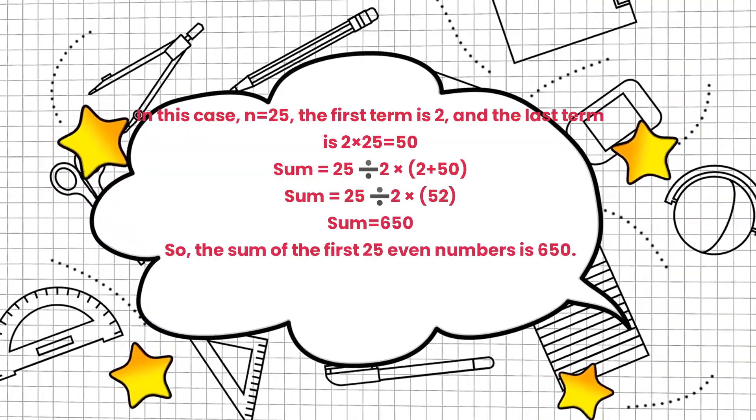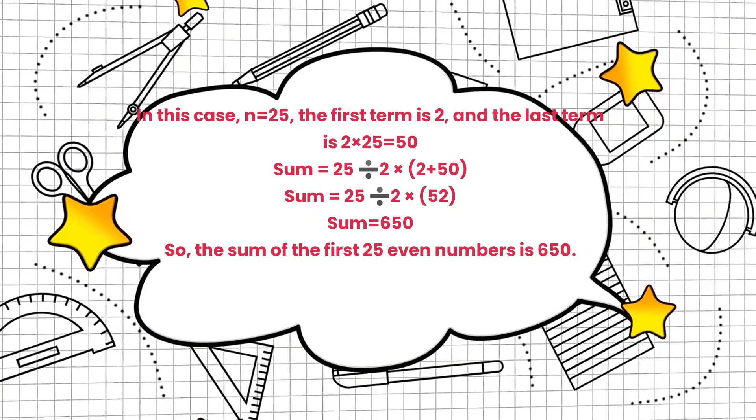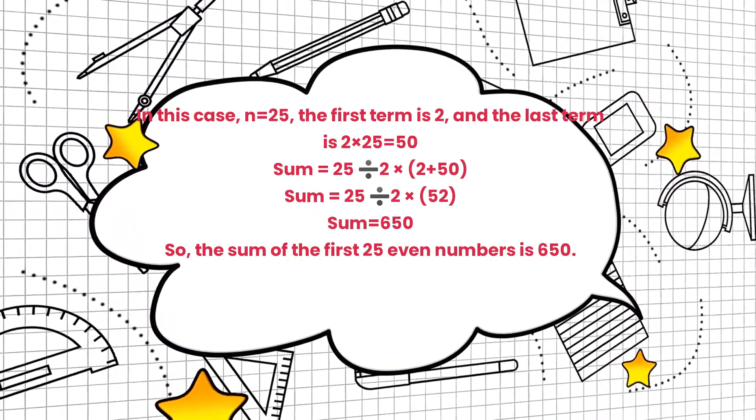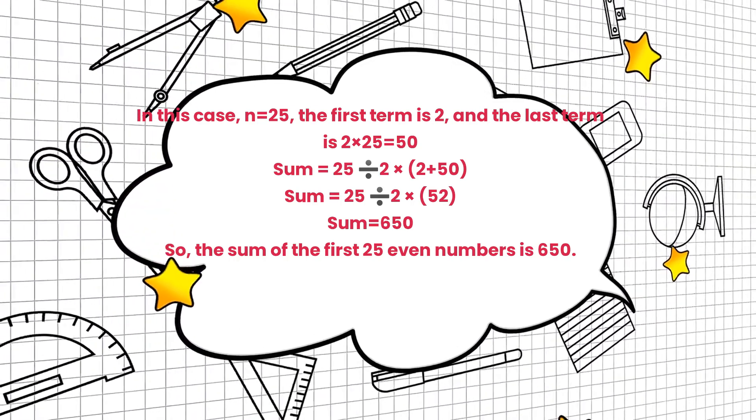In this case, n equals 25, the first term is 2, and the last term is 2 times 25 equals 50. Sum equals 25 divide 2 times 2 plus 50.